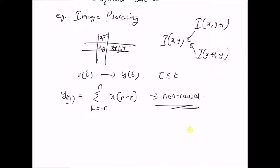To summarize causal systems: the output only depends on the inputs up to the current instant, and all memoryless systems — that is, systems where the output is just a function of the current input — are all causal systems. However, there are many systems in the real world which need not be causal in the temporal sense.